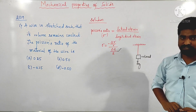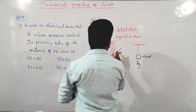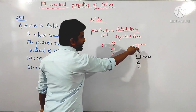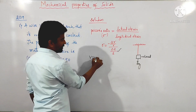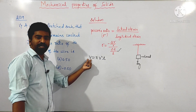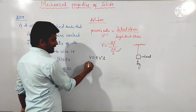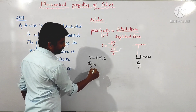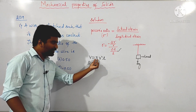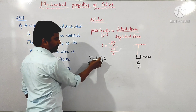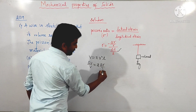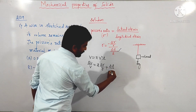This ratio is the Poisson's ratio. Now, we know the volume of a cylindrical body — so the volume of the wire is given by pi r squared l. We need to calculate the fractional change in volume. Using the error formula, delta V by V is equal to 2 times delta r divided by r, plus delta l divided by l.